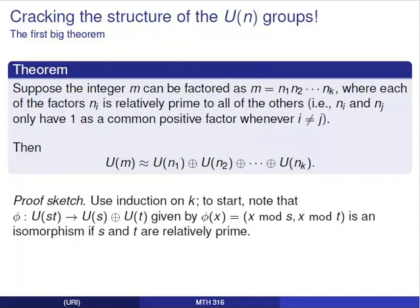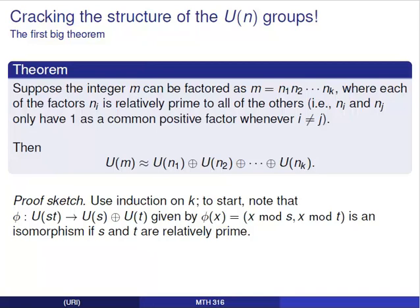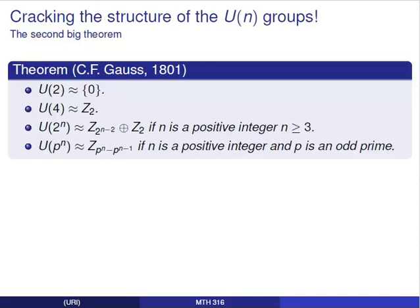How would we prove this? We'll omit the full details here, but the basic idea is this: we'll handle the number of groups in our direct product by induction, starting by looking at the external direct product of two groups. For that situation, we'll define an isomorphism phi mapping U(st) to U(s) × U(t). We take elements of U(st) and mod them out by s and by t to get entries from U(s) and U(t). This is clearly a map to the external direct product, but verifying it is an isomorphism requires that s and t are relatively prime.